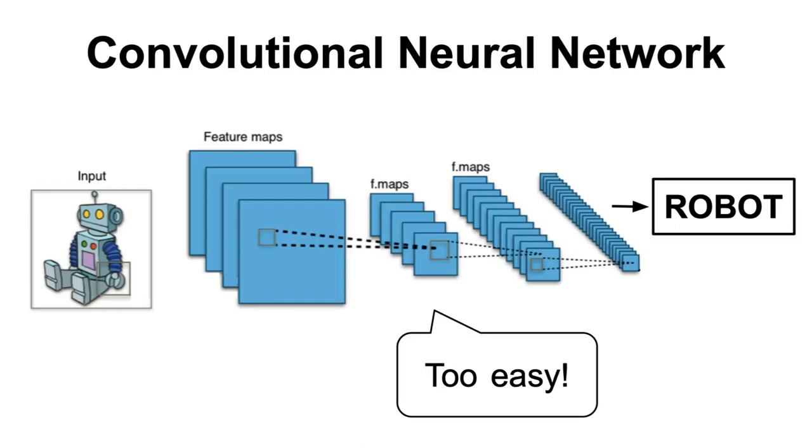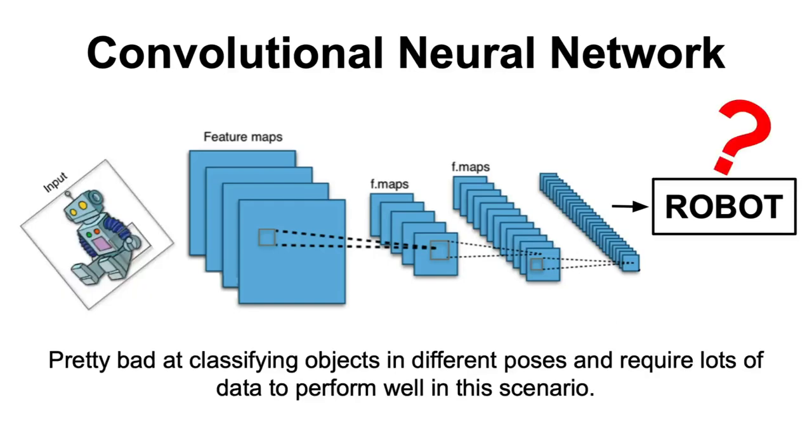One of the issues that this neural network has is that although CNNs achieve the best results in image classification, they are actually pretty bad in classifying objects in different poses and to achieve good performance, a lot of training data is needed.